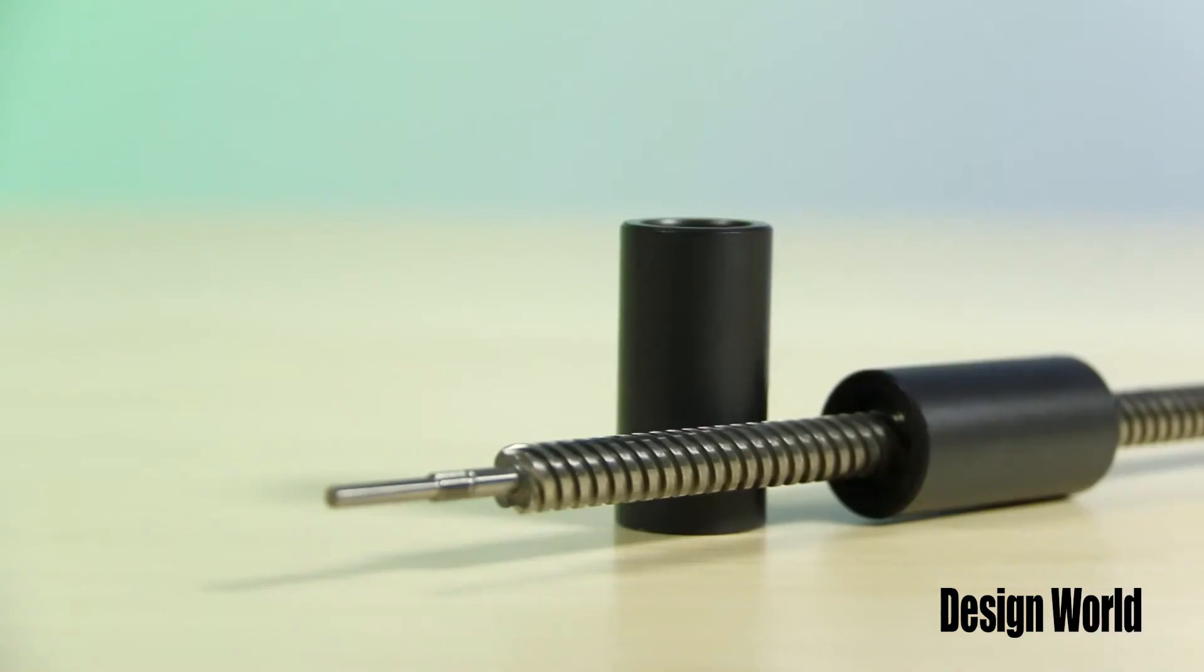And because the Glide Screw serves as both the drive system and linear guide, these features are perfectly aligned and don't bind. So the installation is simplified and the mating components require no high-tolerance geometric features.